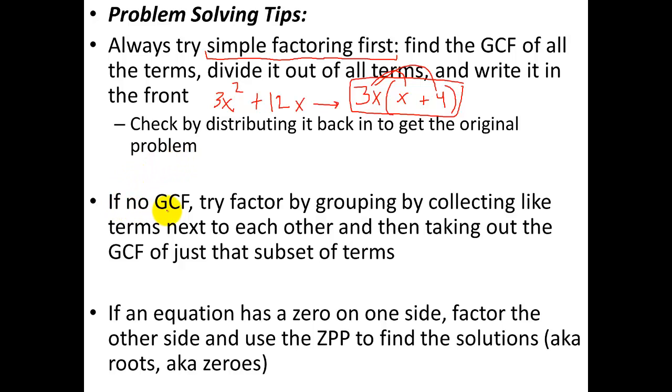Second thing, if there is no greatest common factor, you can try factor by grouping by collecting like terms next to each other. So to factor by grouping, you want to get the first two terms that have something in common and the back two terms that have something in common. And this is pretty much used when you have four terms. So put the two in the front that are similar, put the two in the back that are similar, then factor just out of the front two something and just out of the back two something.